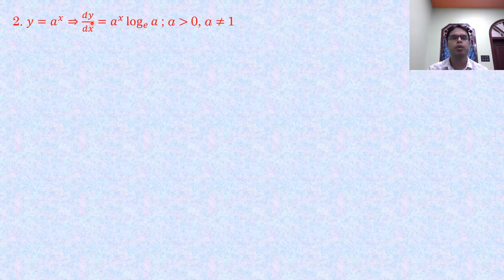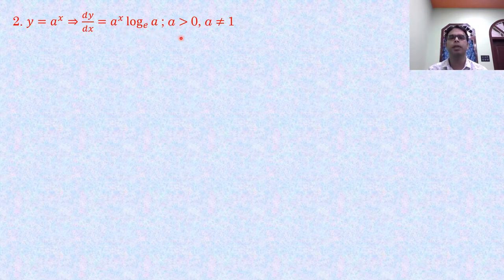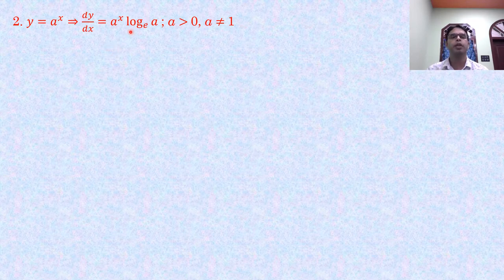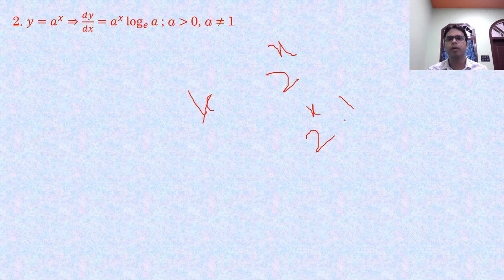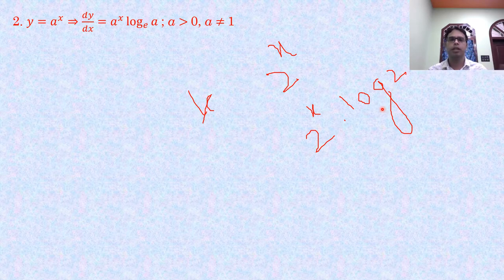Formula 2: if y = a^x, then dy/dx = a^x · log(a), where a > 0 and a ≠ 1. For example, the derivative of 2^x is 2^x · log(2), and the derivative of 3^x is 3^x · log(3).